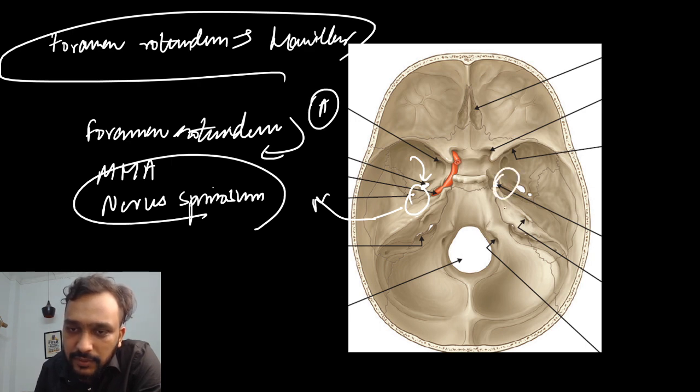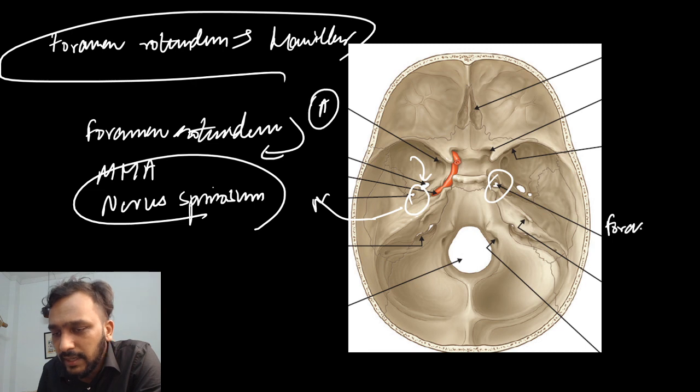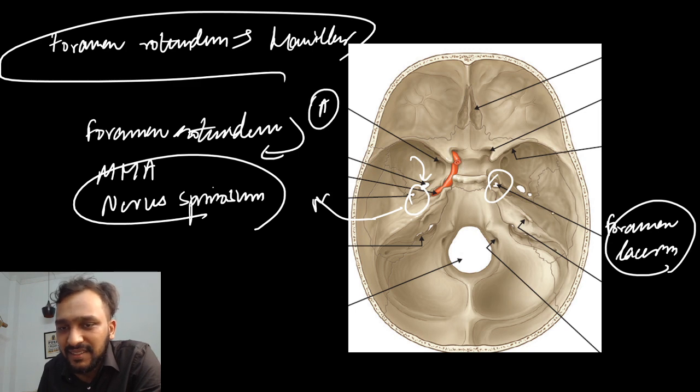Then another structure that you can see just adjacent to the sella, this is your foramen lacerum. The structure passing through this foramen lacerum is your internal carotid artery.